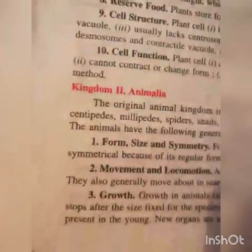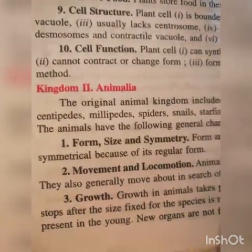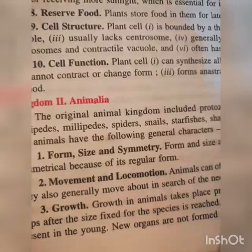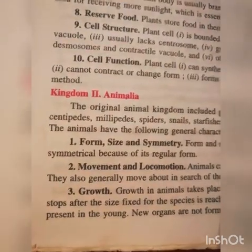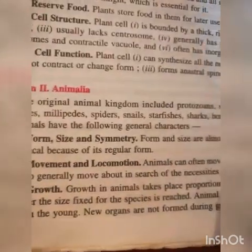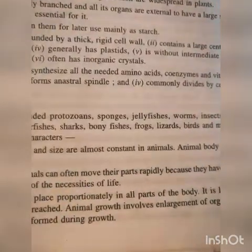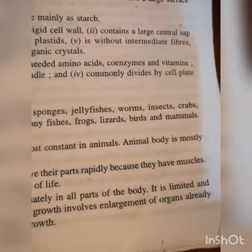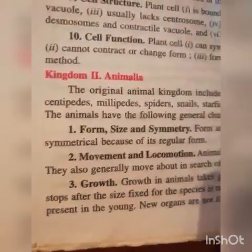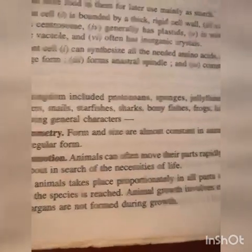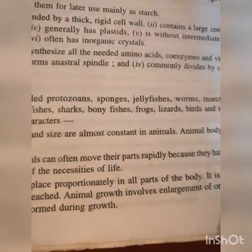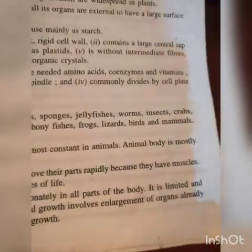Next kingdom: Animalia. In the two kingdom system of classification, the first is Plantae and the second is Animalia. The original animal kingdom includes protozoans, sponges, jellyfish, worms, insects, crabs, centipedes, millipedes, spiders, snails, starfish, sharks, bony fishes, frogs, lizards, birds, and mammals.